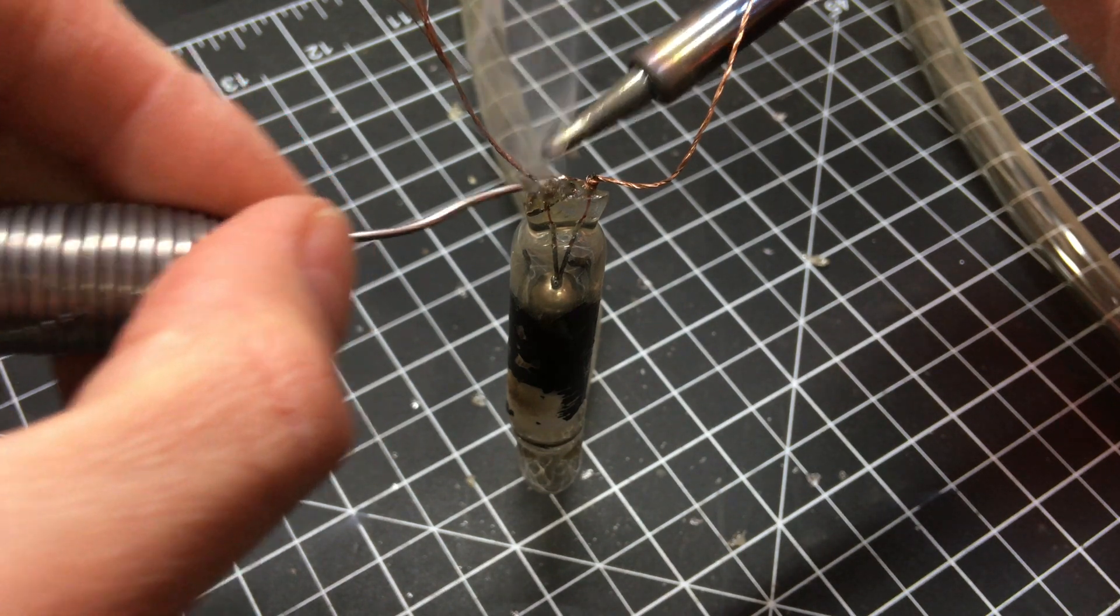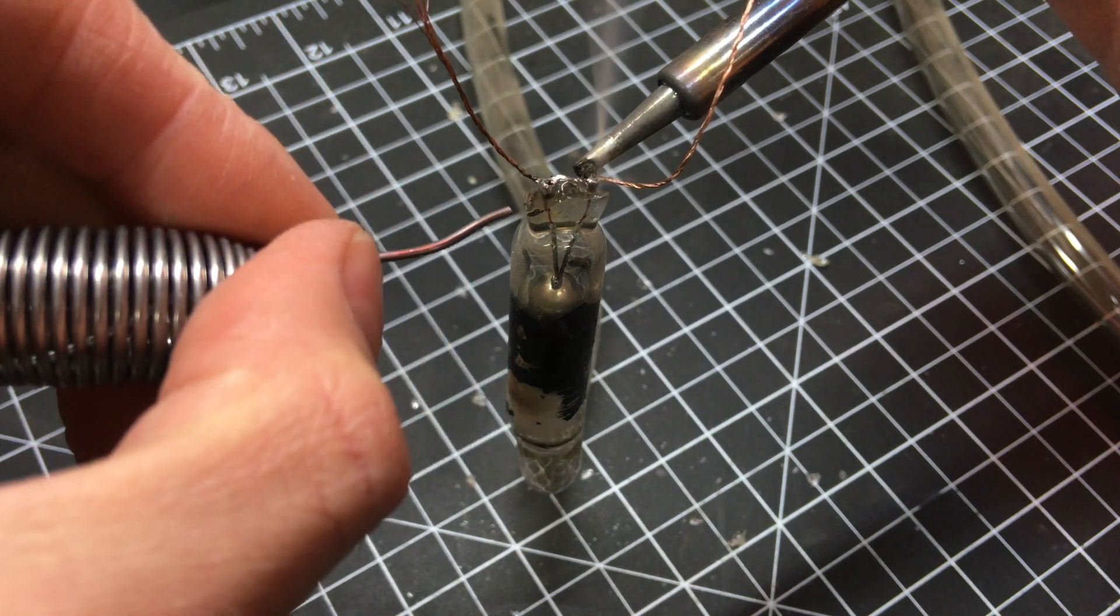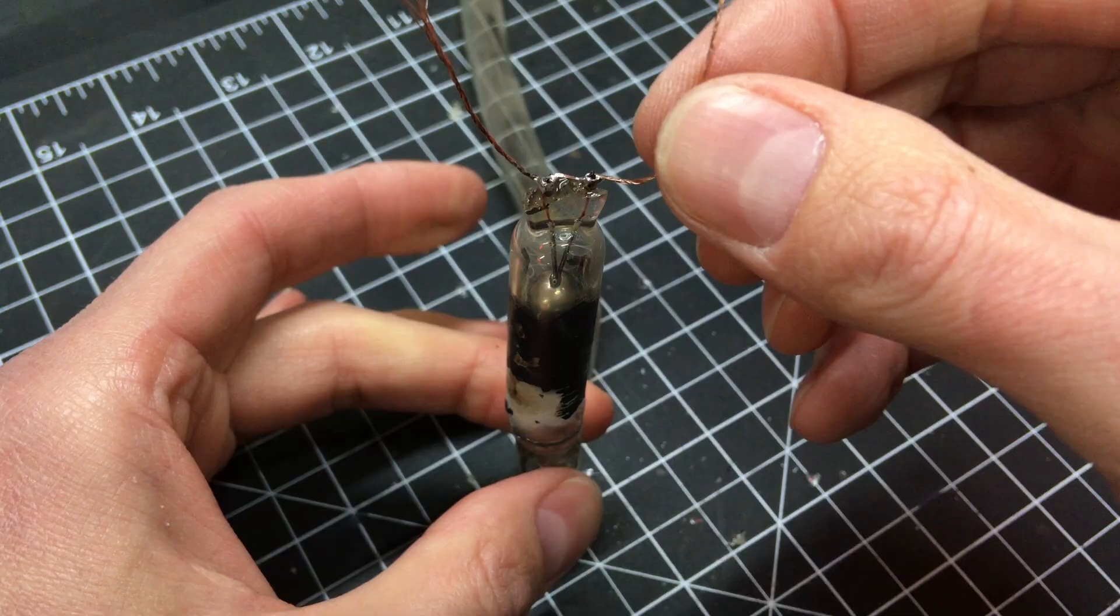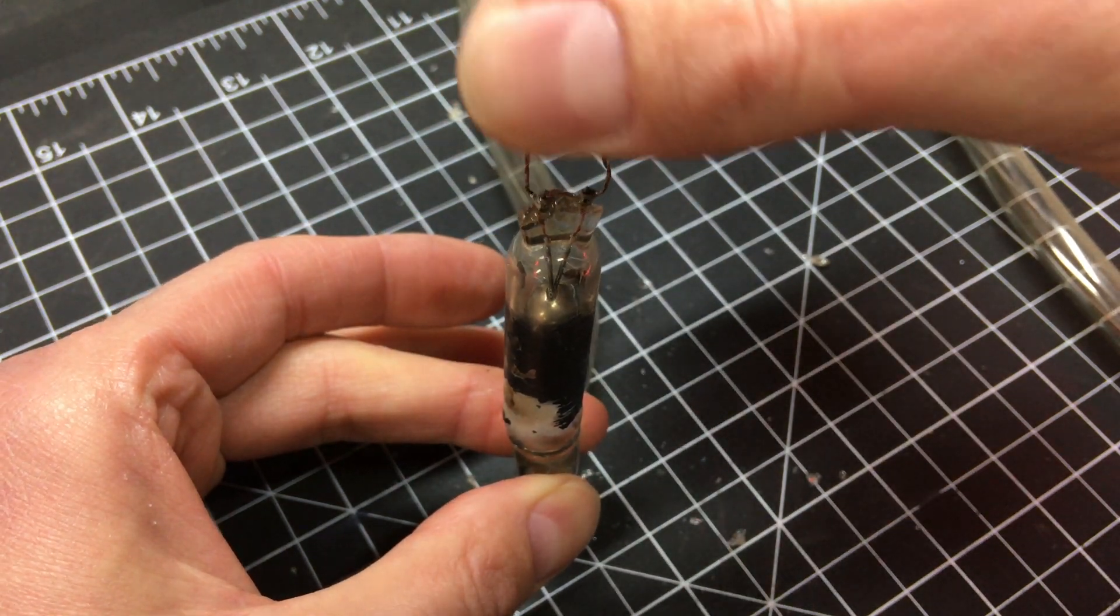Keep in mind that too much heat can cause the glass in the electrode pinch seal to crack, so apply heat for the shortest amount of time possible while still getting a good bond. A firm tug on the wires makes sure the joints are holding.